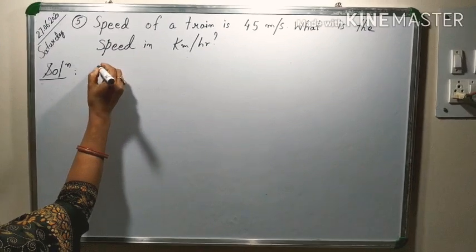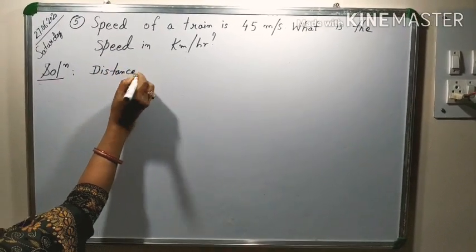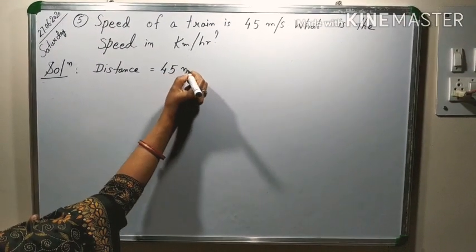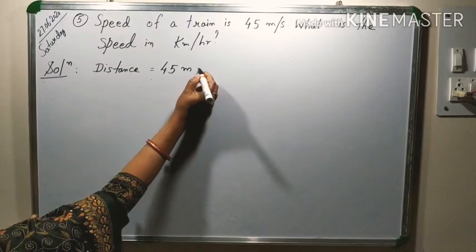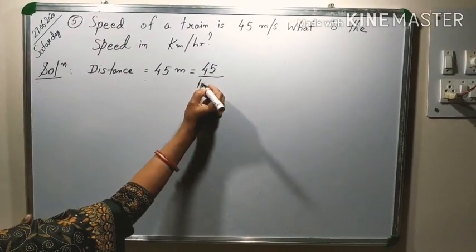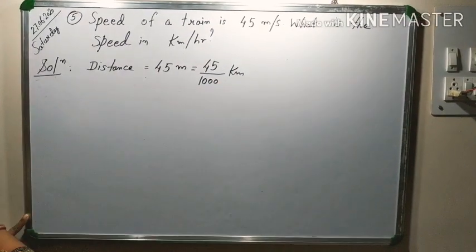So, separately I am showing here distance 45 meter. So, distance we change it into kilometer. It will become 45 divided by 1000.